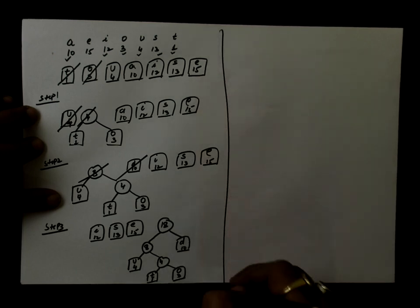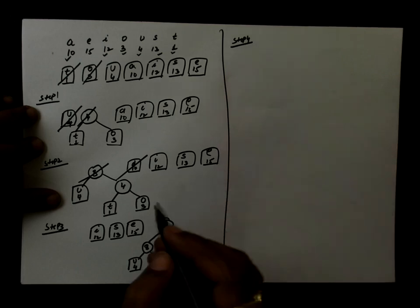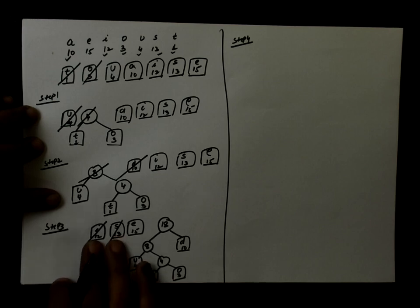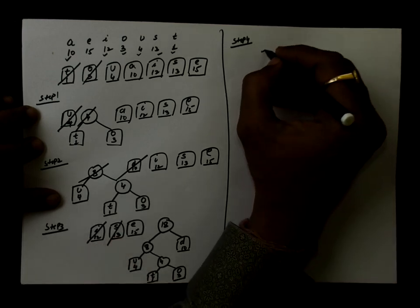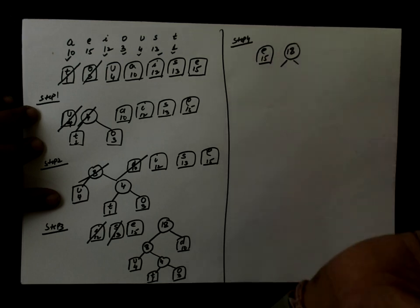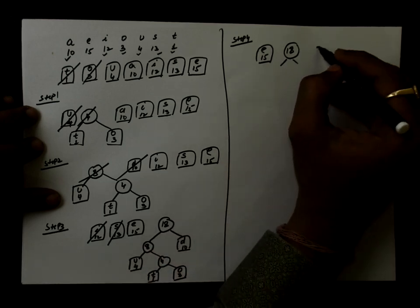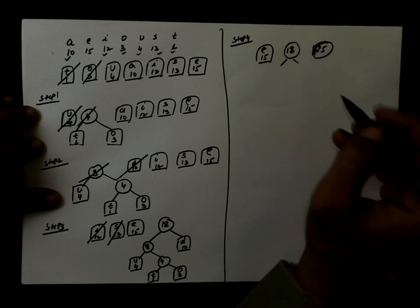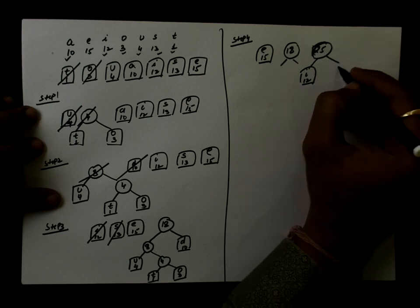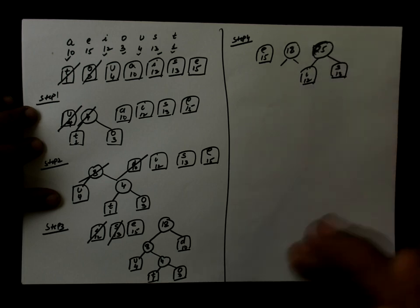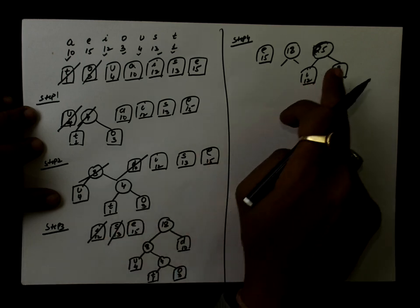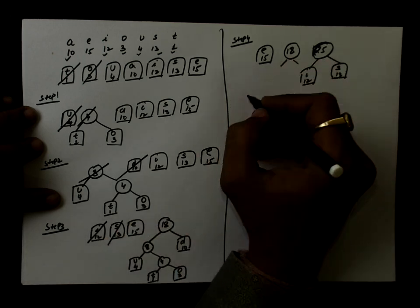In step 4, we will delete these two front elements. The cumulative sum will be 12 plus 13 equals 25, and 25 will be inserted after 18. So E with 15, 18, and then 25 is the newly created node. For the left child, it will be I with 12, and the right child will be S with 13. Remember that the first deleted element is the left child and the next deleted element is the right child of the newly created node.